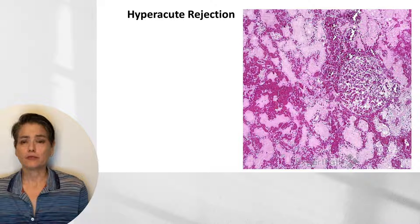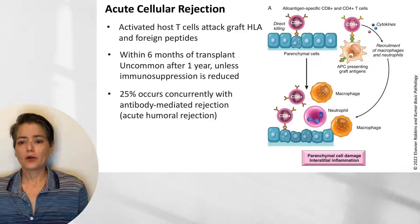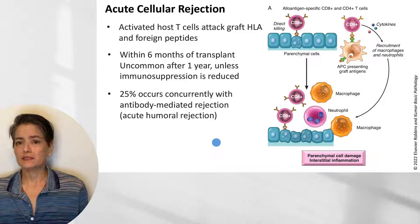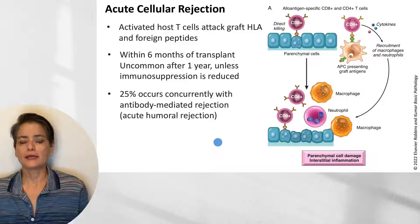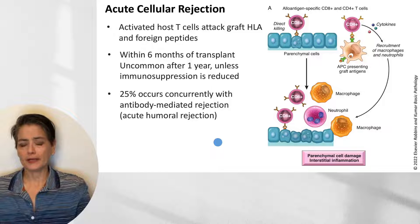Fortunately, hyperacute rejection is very uncommon. What is more common will be acute cellular and acute humoral rejection. We see activated host T cells attacking the graft HLA-informed peptides, and this typically occurs within six months of transplant.